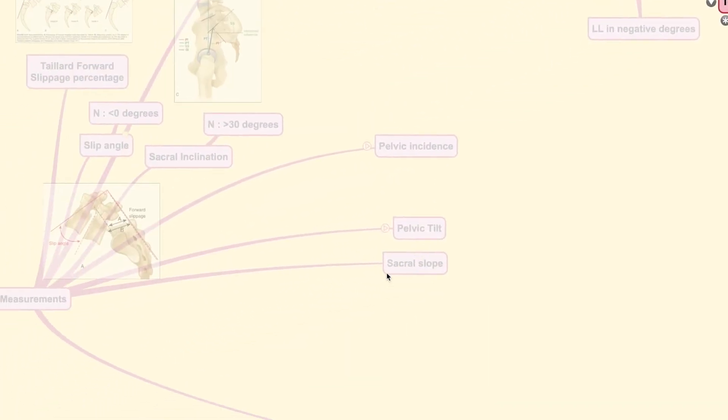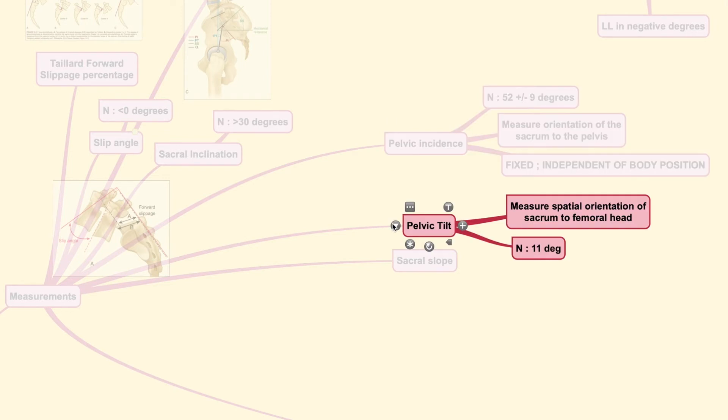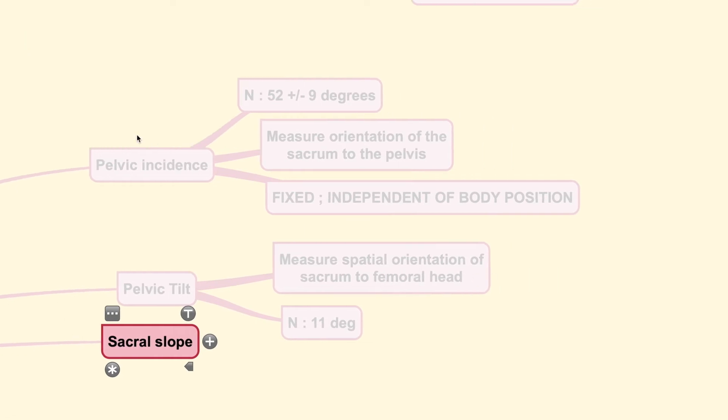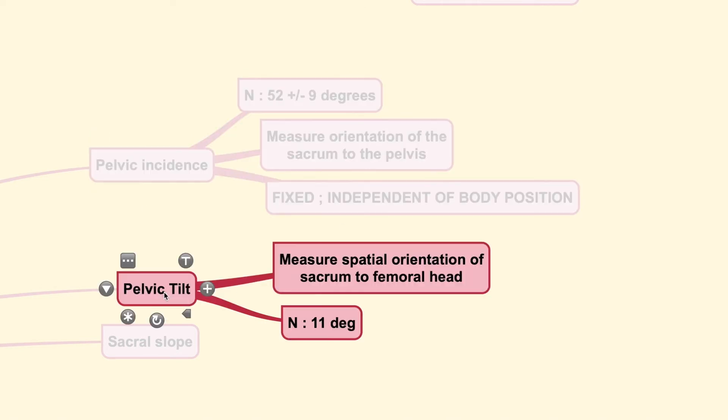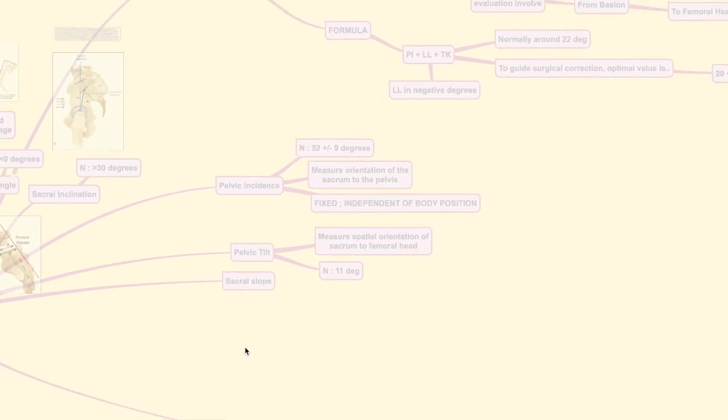These pelvic measurements, which earlier included the pelvic incidence, pelvic tilt, and sacral slope, each has a very different meaning. For the pelvic incidence, it measures the orientation of the sacrum relative to the pelvic. It is a fixed number and it is always independent of body position. Normally, it ranges 52 to more or less 9 degrees. And the pelvic tilt is a measurement which measures the spatial orientation of the sacrum relative to the femoral head. Normally, this should also be around 11 degree. Now, moving on...